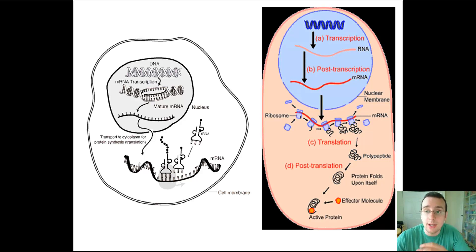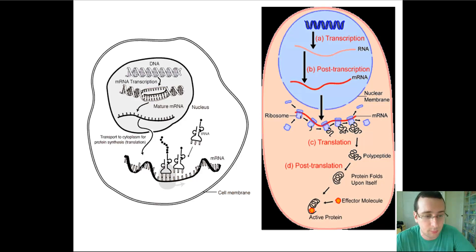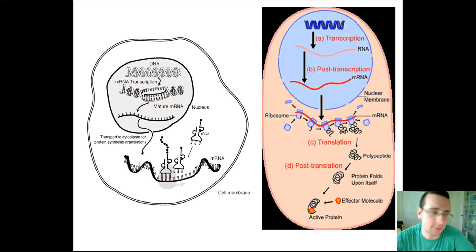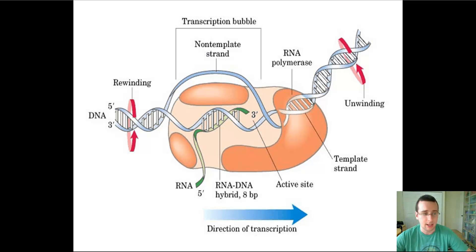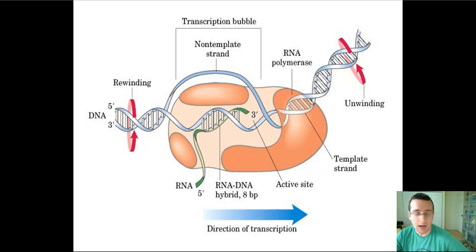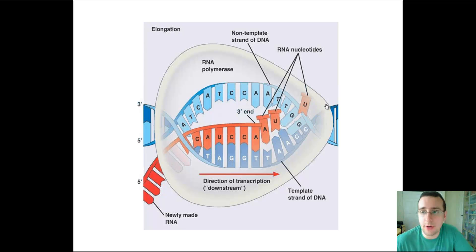After that, another set of enzymes and even organelles, such as the Golgi apparatus and the rough endoplasmic reticulum, will do the job of post-translational modification of the proteins. Now let's talk about how this actually happens, starting with transcription. Transcription is the process by which DNA becomes RNA, and this is done with the help of an enzyme called RNA polymerase. There are actually several different kinds of RNA polymerase.